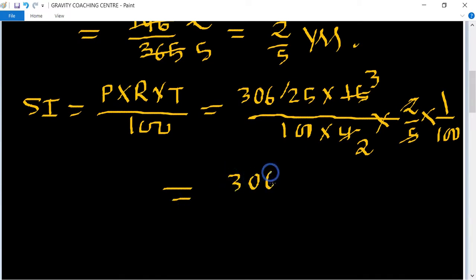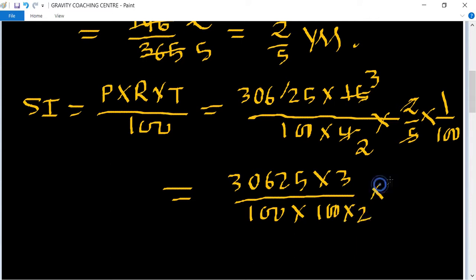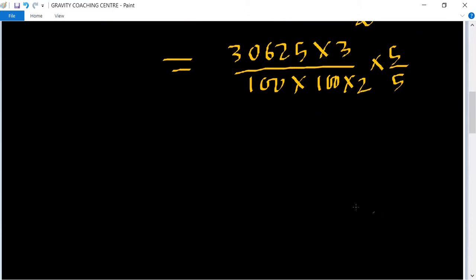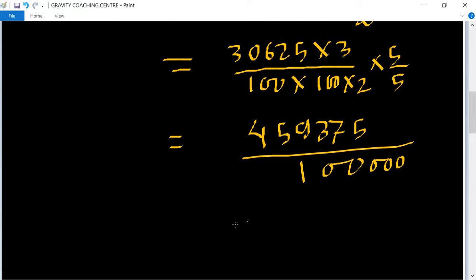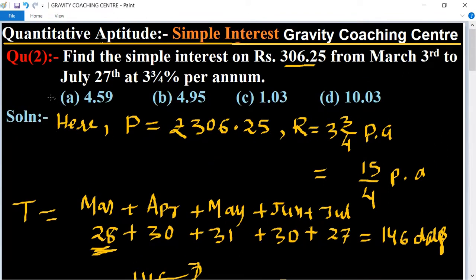Equals 306.25 multiplied 3 upon 100 into 100 into 2. Now multiply by 5 upon 5, equals 459375 upon 1000, equals 4.59375, which is the required answer. So option A is the right answer.